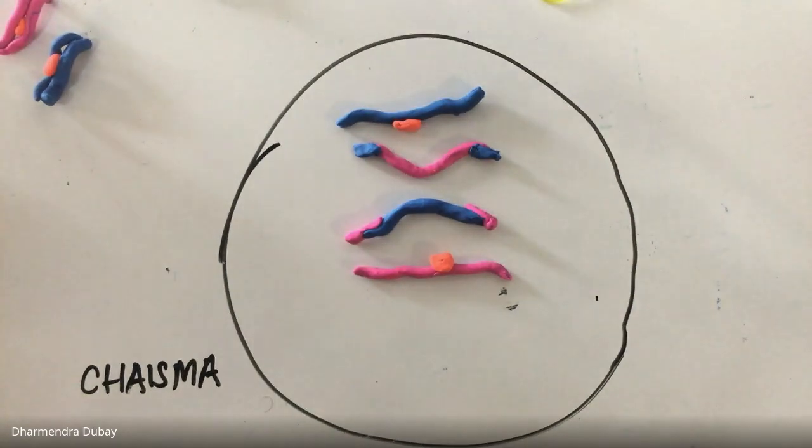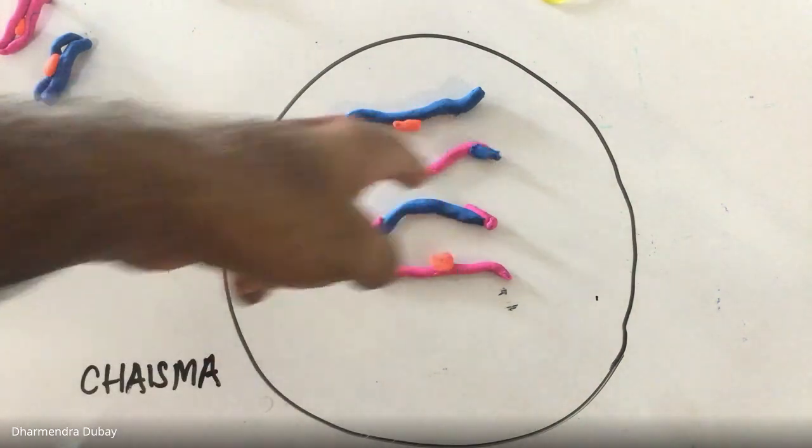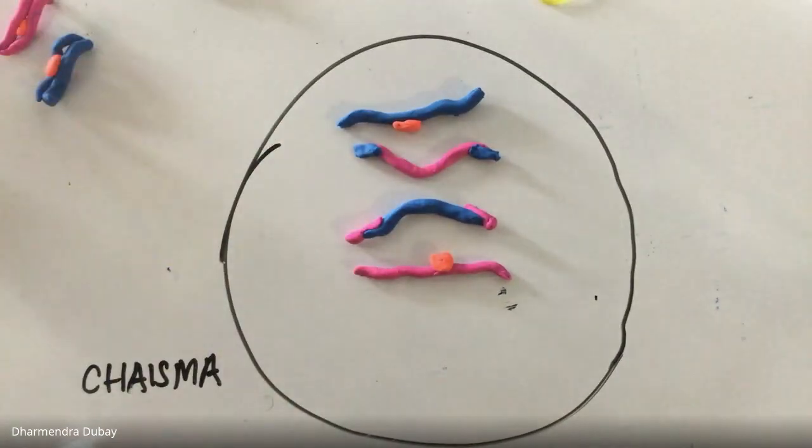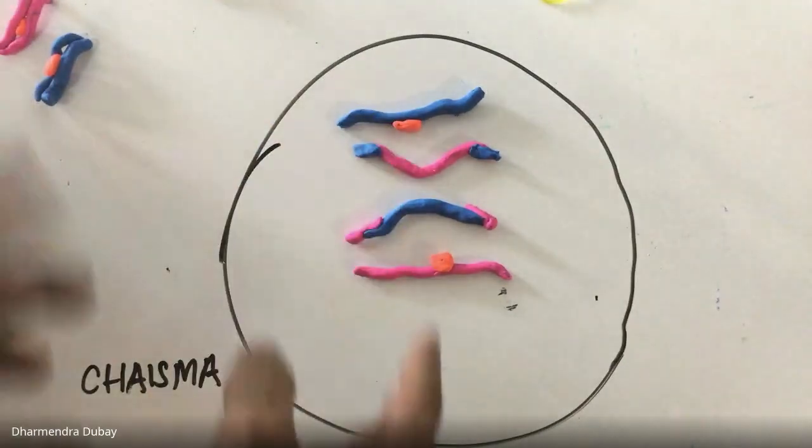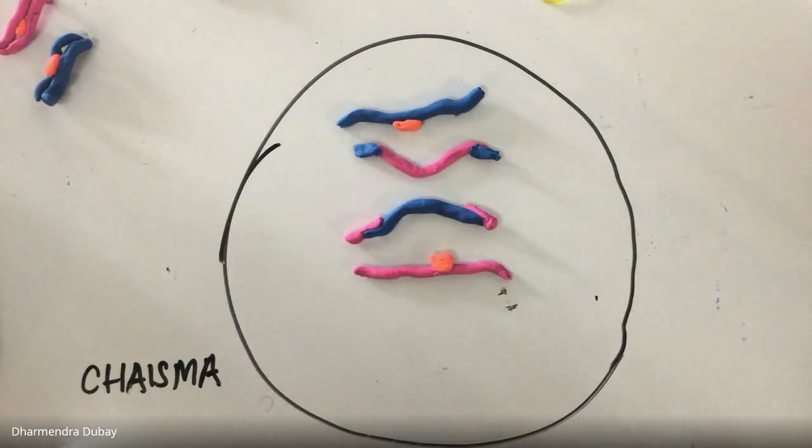And then think that there are 23 pairs where this can happen, and it doesn't just happen at two little points, it happens at lots of points, little points here and there. Crossing over, so there's a lot of variation that comes about because of crossing over.